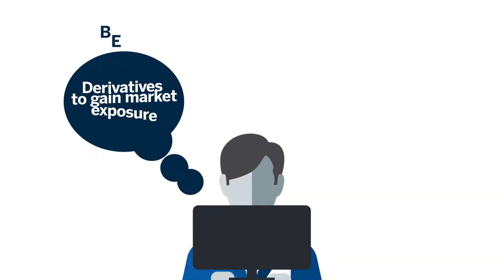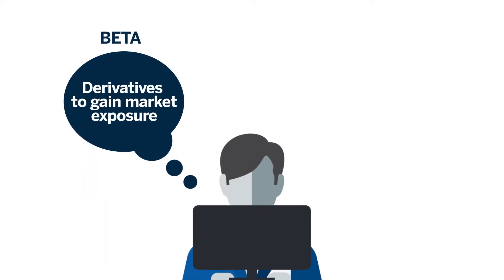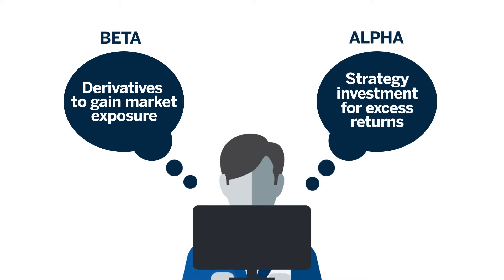Portable alpha is a strategy that uses derivatives to gain market exposure, or beta, coupled with an investment in a separate and distinct strategy designed to generate excess returns, or alpha. Portable alpha strategies with equities trace their beginnings back to the 1980s.